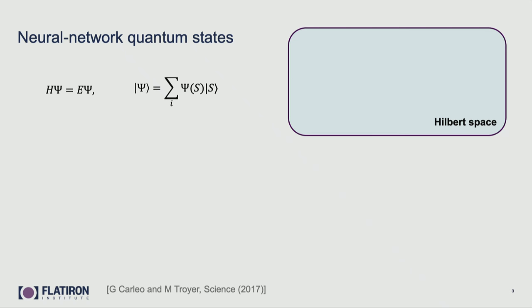In the previous talk, there was already a very nice introduction into neural network quantum states, which makes my life a bit easier, but I'm going to reintroduce them anyway to make sure everybody is on the same page. What's the problem we're considering? We want to solve a many-body problem. In particular, we focus on the time-independent Schrödinger equation — we have a Hamiltonian, and we want to find the ground state wave function and the associated energy. Let's focus on the ground state energy for now.